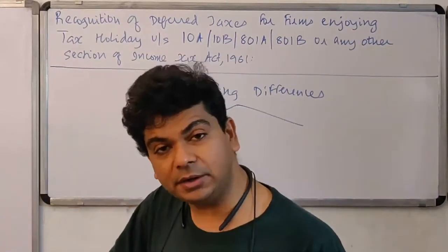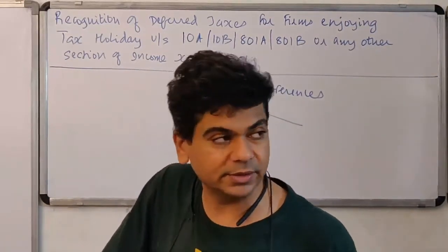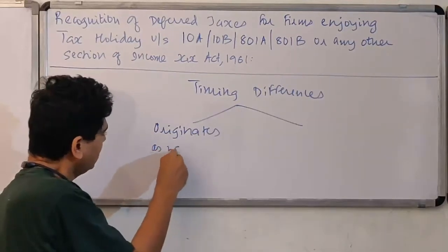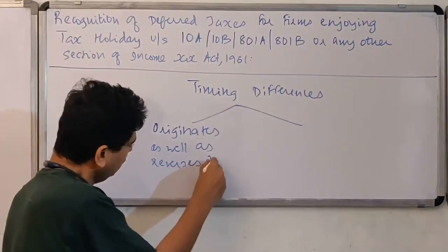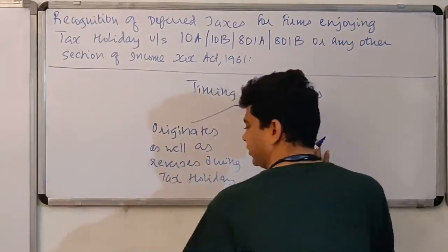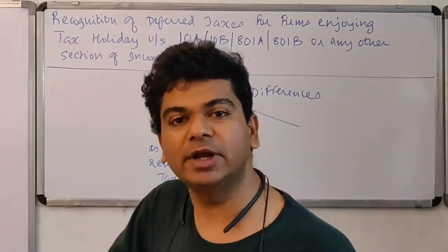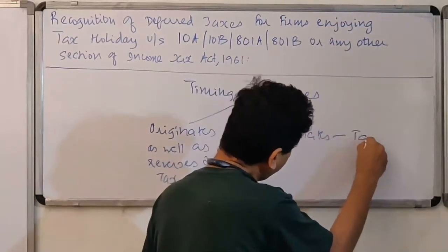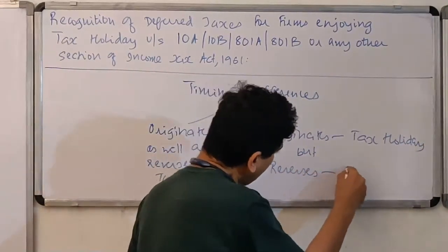Category one is a timing difference that originates during the tax holiday period and also reverses during the tax holiday period. The second possibility is a timing difference that will originate during the tax holiday period but will reverse after the end of the tax holiday period. So: category one — originates as well as reverses during tax holiday; category two — originates in tax holiday but reverses after tax holiday.